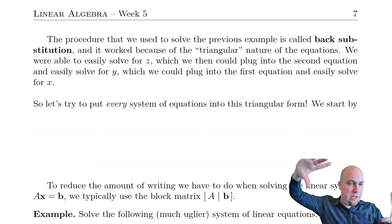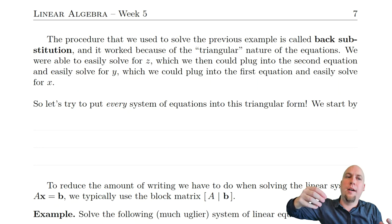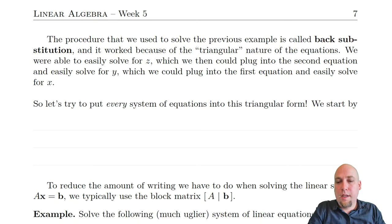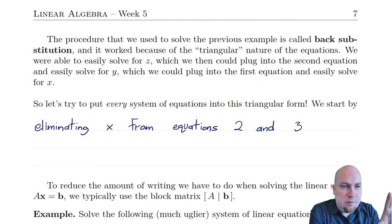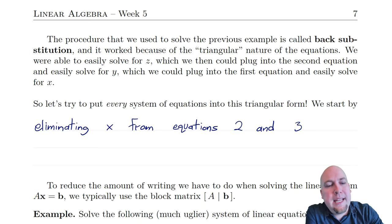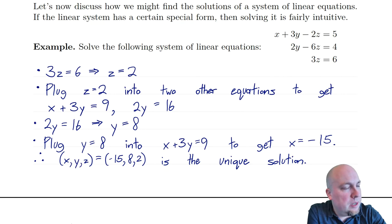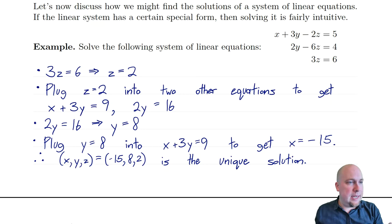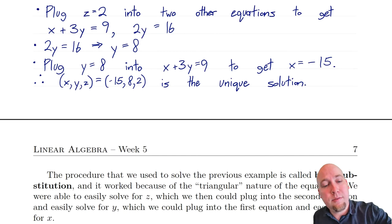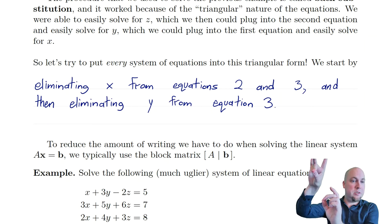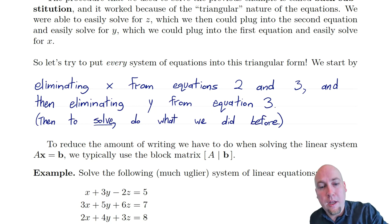What if we could transform every linear system into that triangular form? We start off with an ugly linear system that has x's, y's, and z's all over the place, and we do natural operations that don't change what the solutions are but bring the system into the easy-to-solve triangular form. For a three-variable, three-equation system, we could start by eliminating x from equations two and three, then eliminate y from the third equation — and then we'll have the triangular form where we can do back substitution.